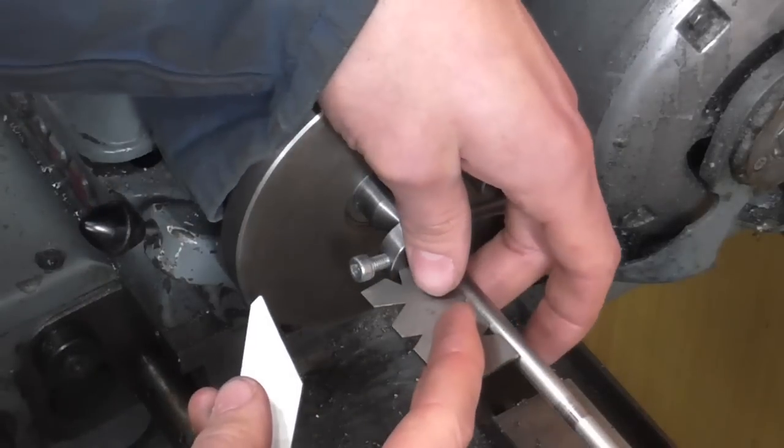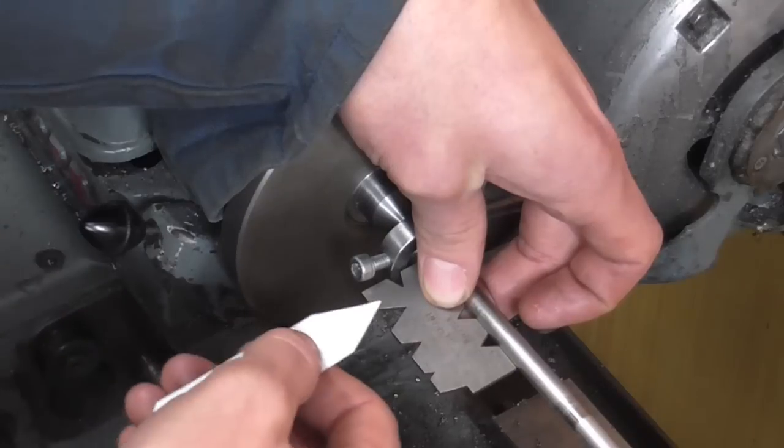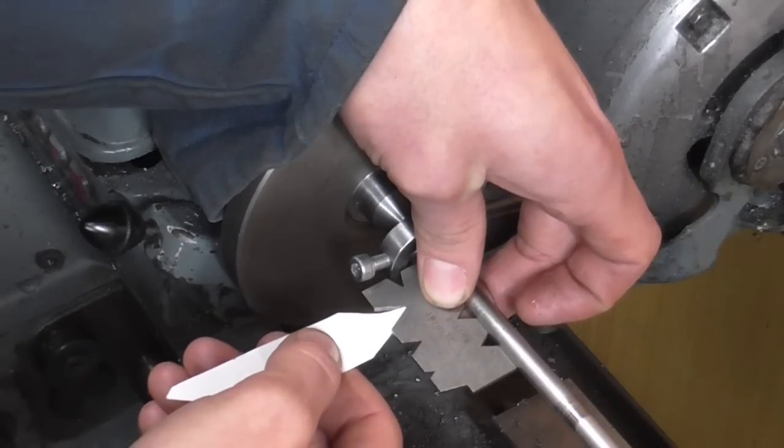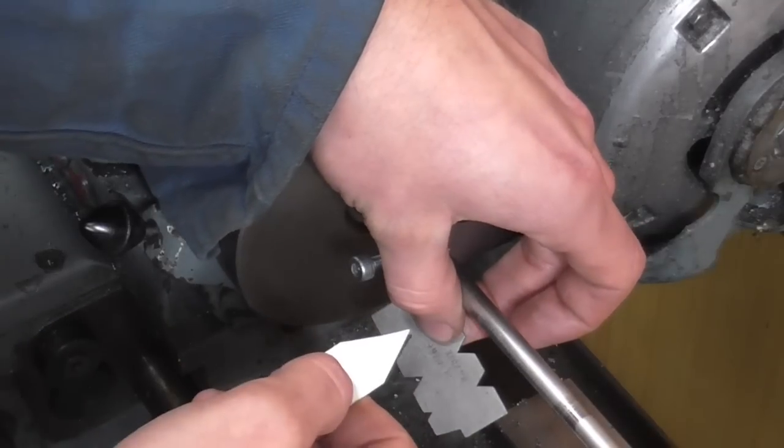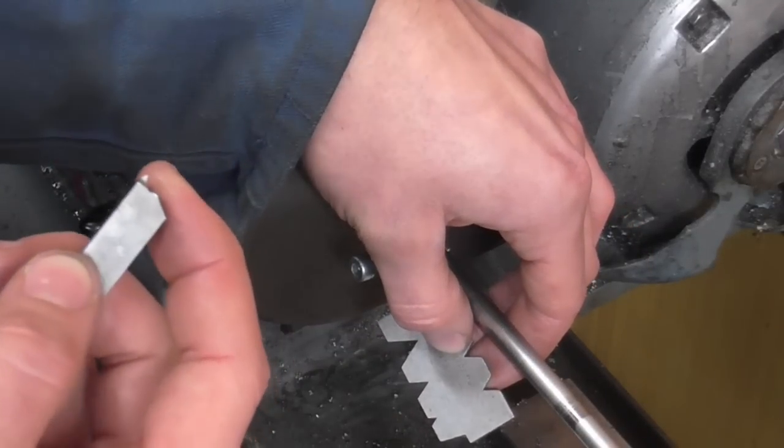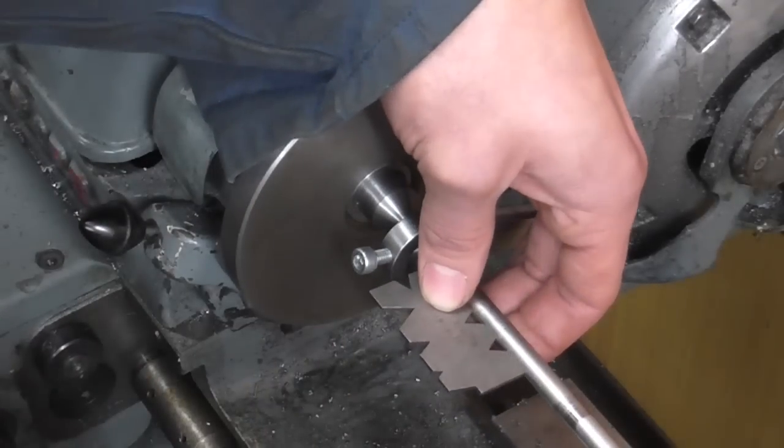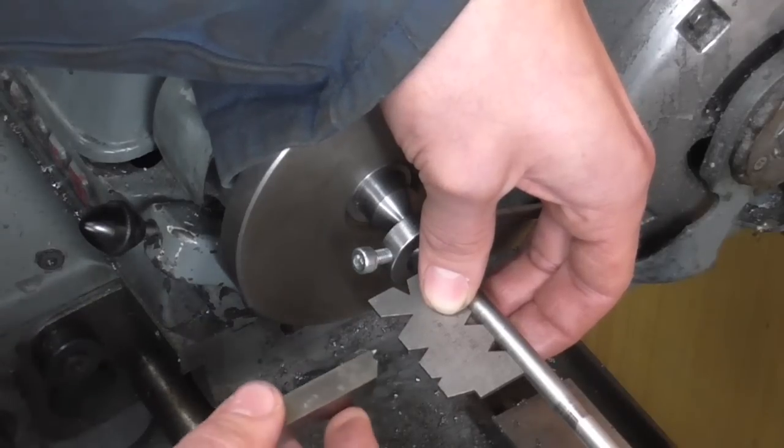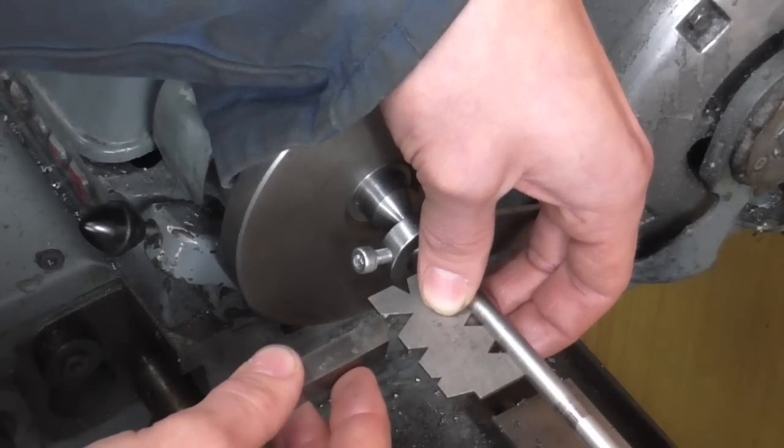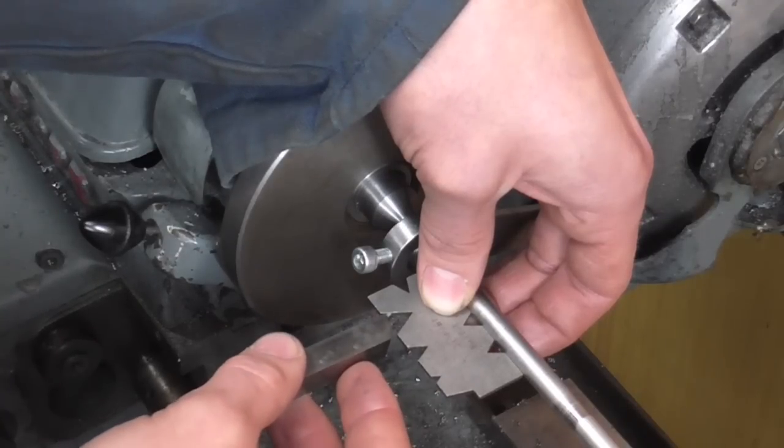So commonly to set a threading tool you take your fishtail gauge, you hold it against a known reference, and you manipulate your tool until you're happy with the angles. Now that's fine, but what happens when the tool becomes that small that it's not easy to do that? The reference surface of the tool is that small that trying to accurately set an angle becomes a bit haphazard.